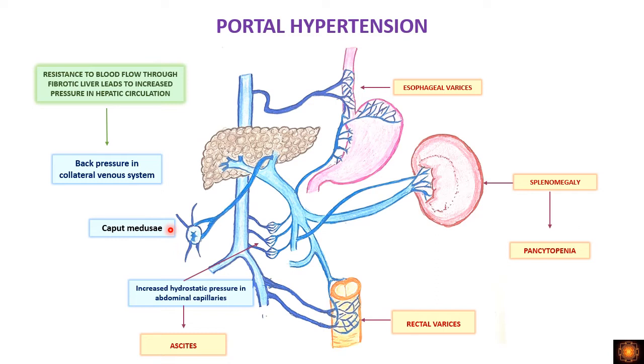At the umbilicus there is engorgement of the veins, which we call caput medusae. So the consequences of portal hypertension are esophageal varices, splenomegaly leading to pancytopenia, rectal varices, and ascites.